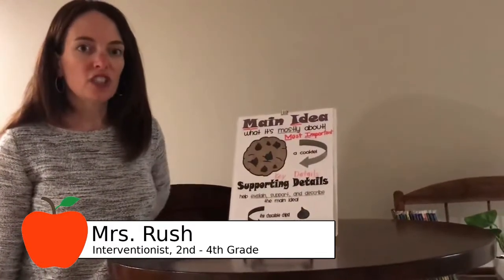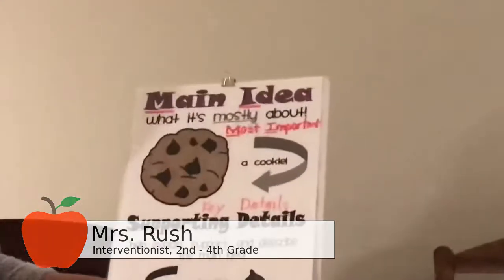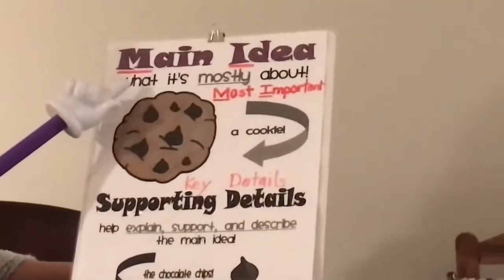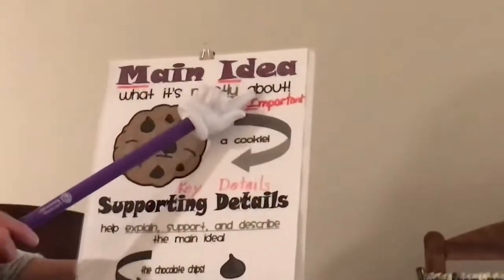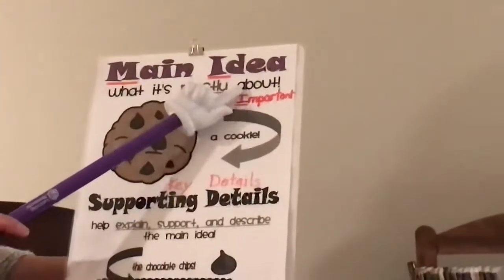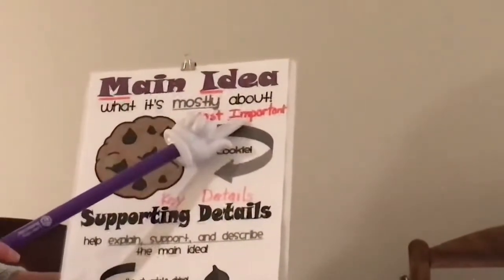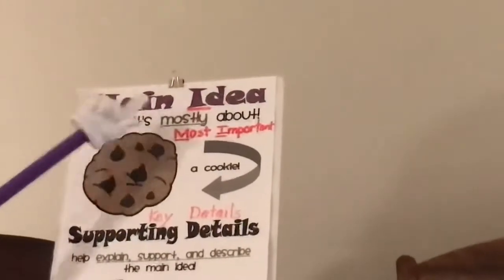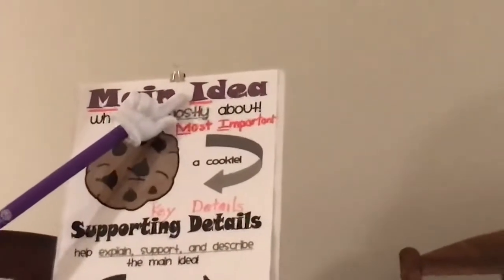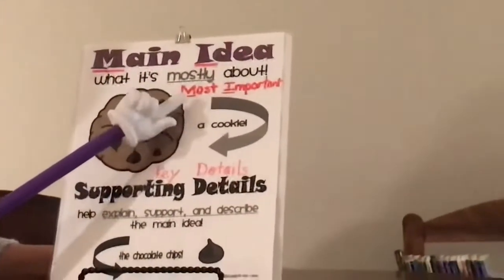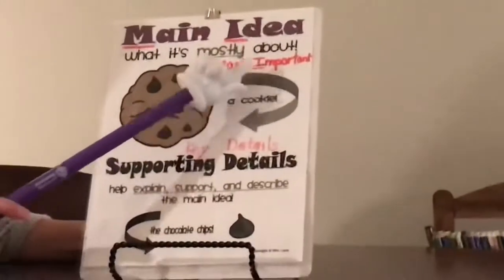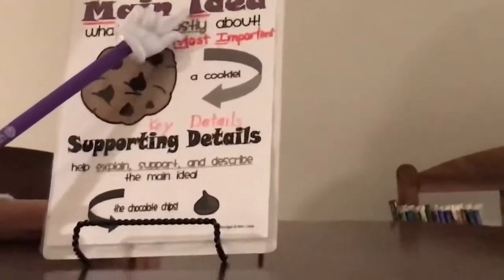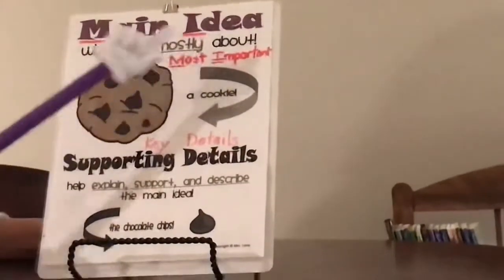Let's start with the definition of main idea and key details. Main idea is what our text is mostly about. As good readers, we wonder what it's mostly about — it's the most important idea in a text. I underline the M in main and the I in idea. A little trick: most starts with M like main, and important starts with I like idea. So main idea means the most important idea of a text.